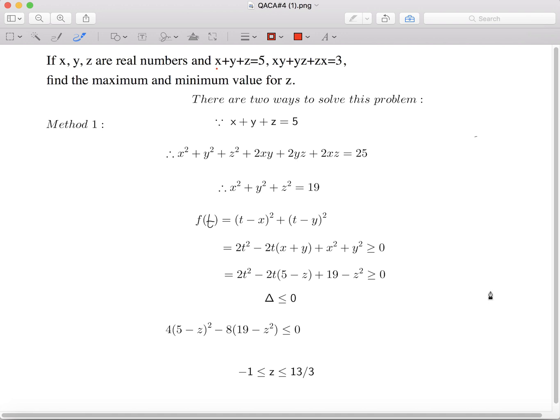The question I'm going to talk about today is if x, y, z are real numbers and x plus y plus z is 5, xy plus yz plus zx is 3, find the maximum and minimum value for z.